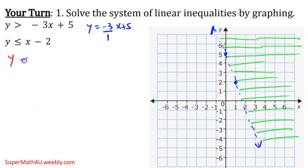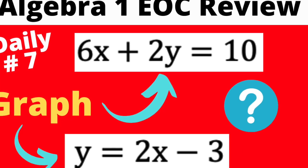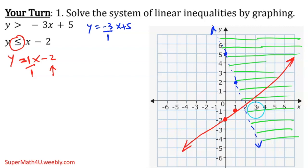For the second inequality, I turn it into an equation and leave the y by itself, which it already is. My y-intercept is negative 2, so I go to negative 2. My slope — there's no number in front, so it's 1 over 1. Up 1, 1 to the right. I have my two points and I'm ready to draw my line. The inequality has an equal, so it's going to be a solid line.